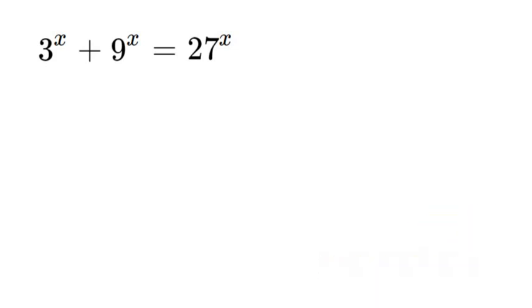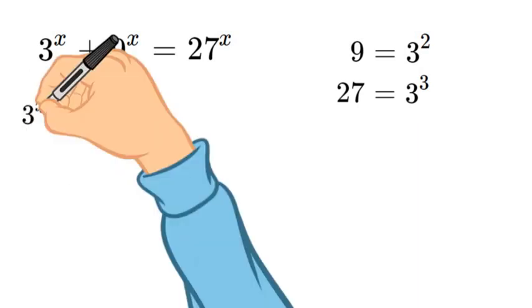Now the first thing we're going to do is rewrite everything so that it has the base of 3. So 9 is equal to 3 squared and 27 is equal to 3 cubed. Let's go ahead and rewrite that.